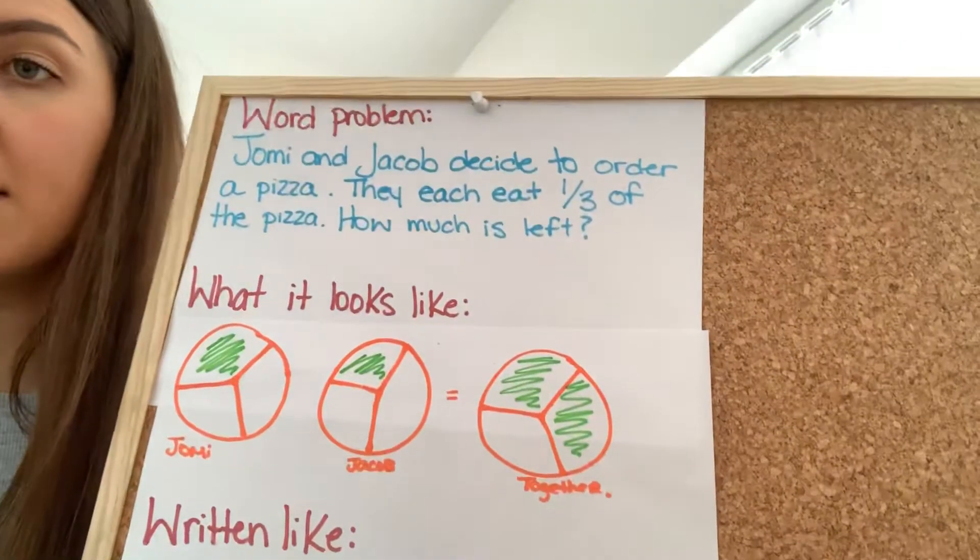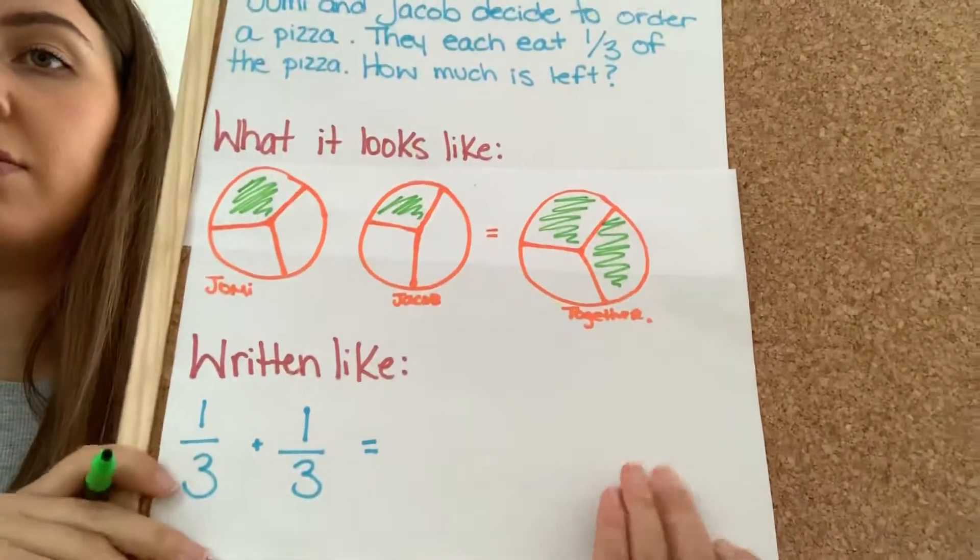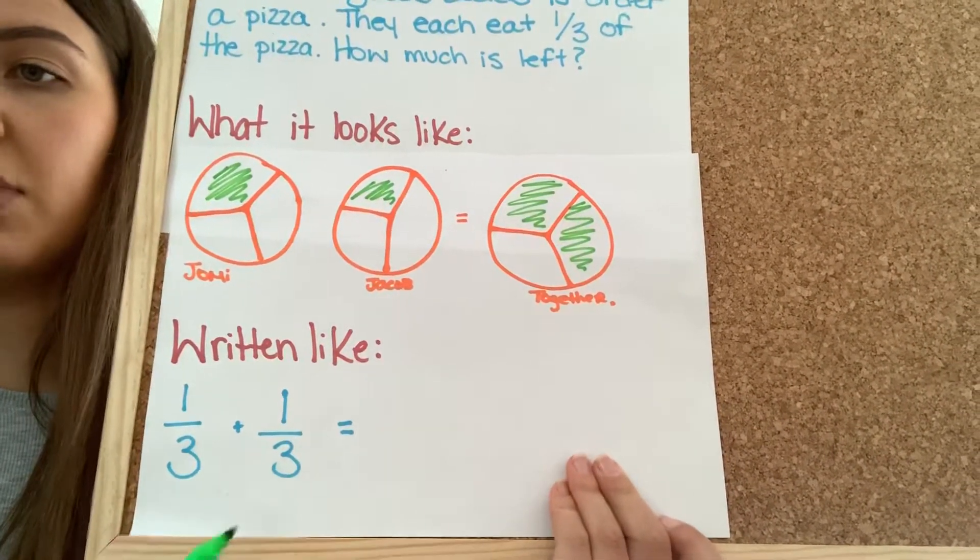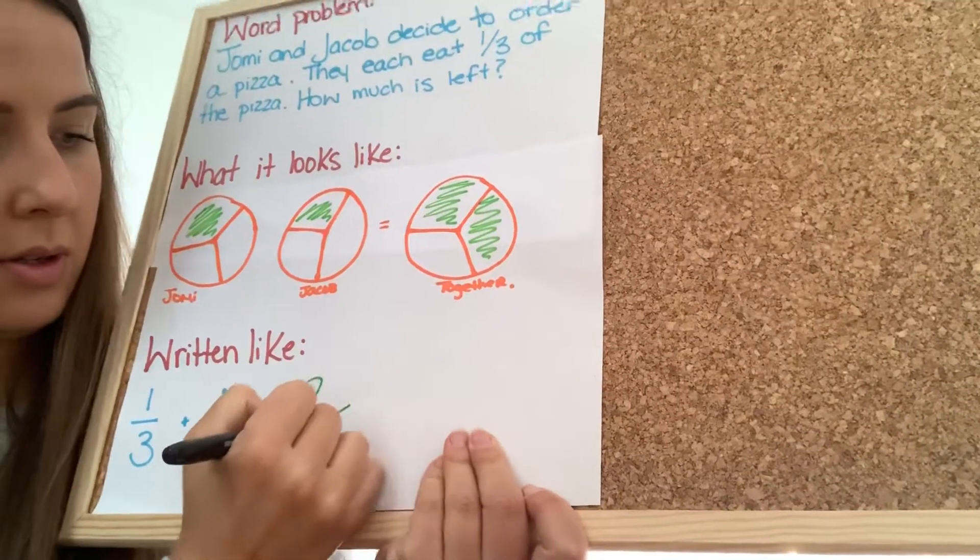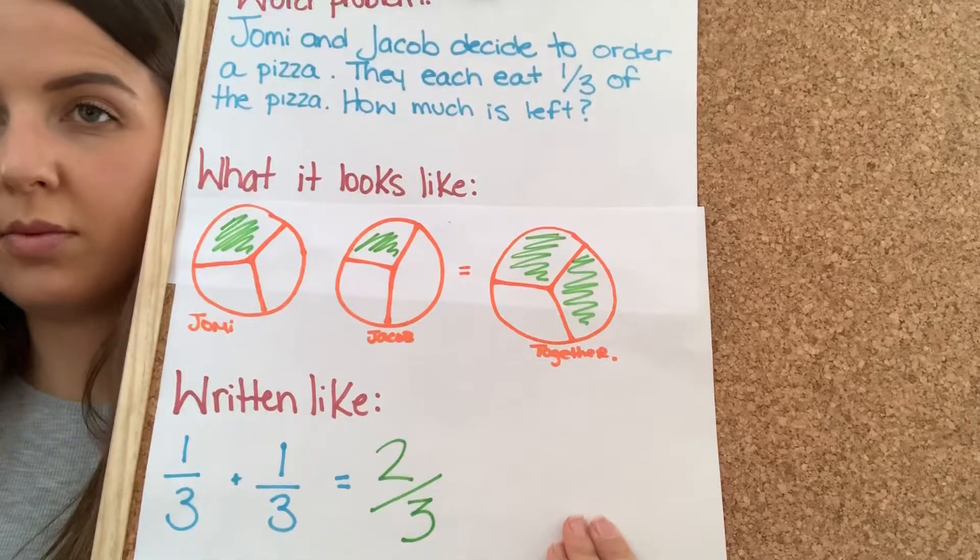So, together, how many thirds did they eat? The answer is two. So, one-third plus one-third equals two-thirds. Okay.